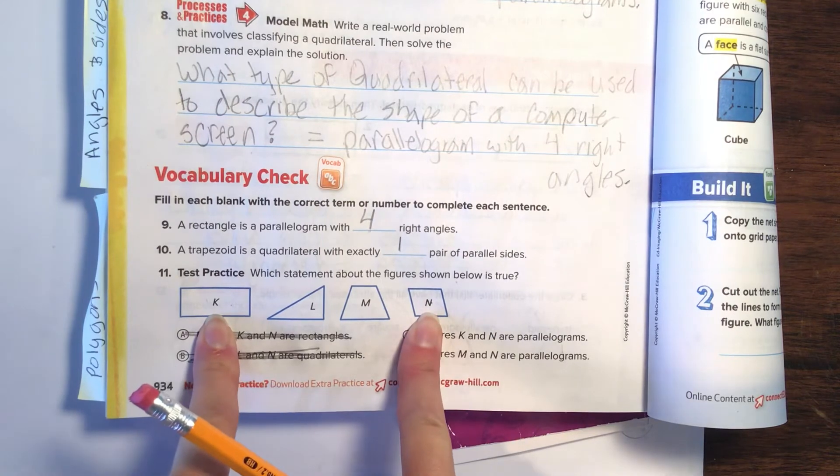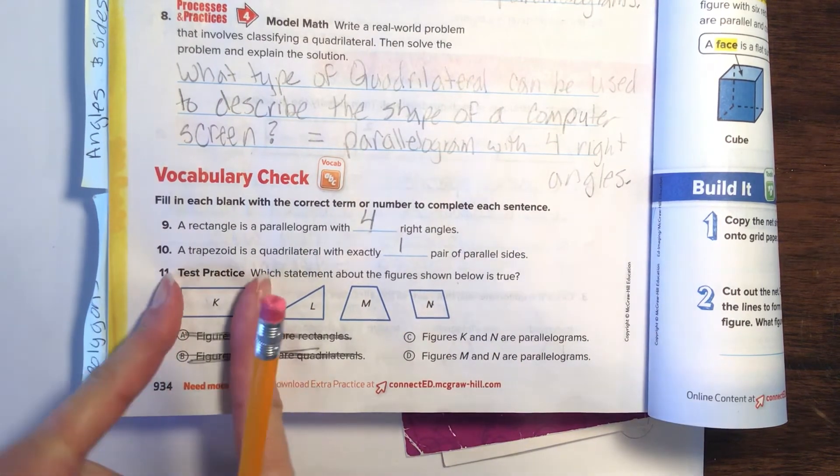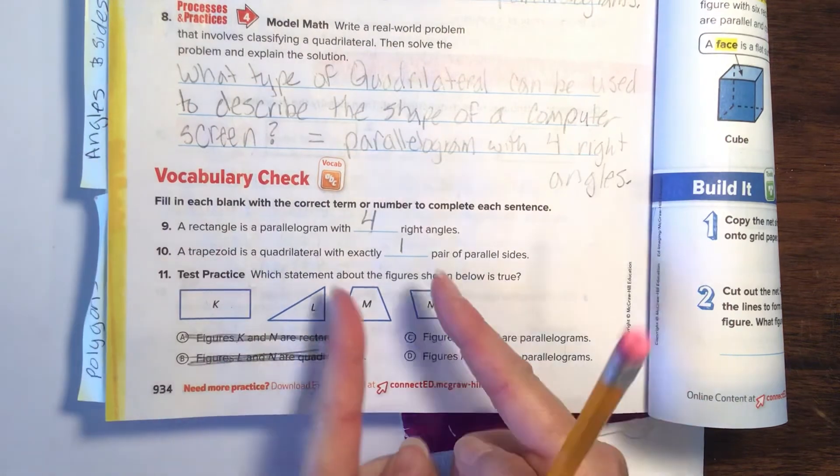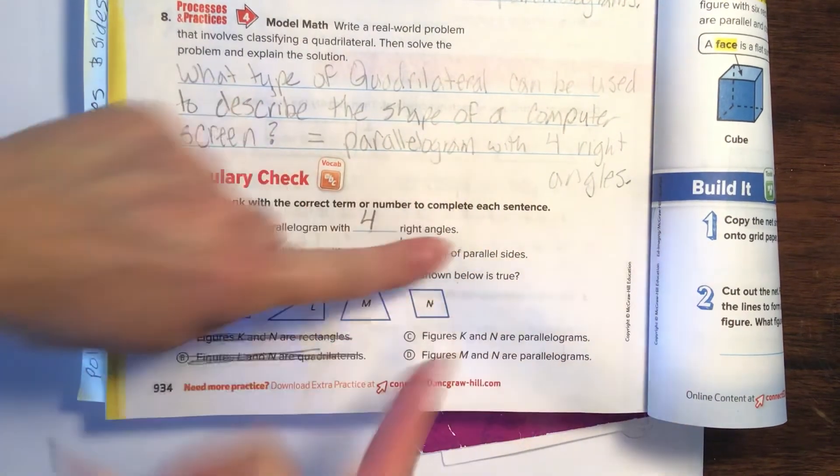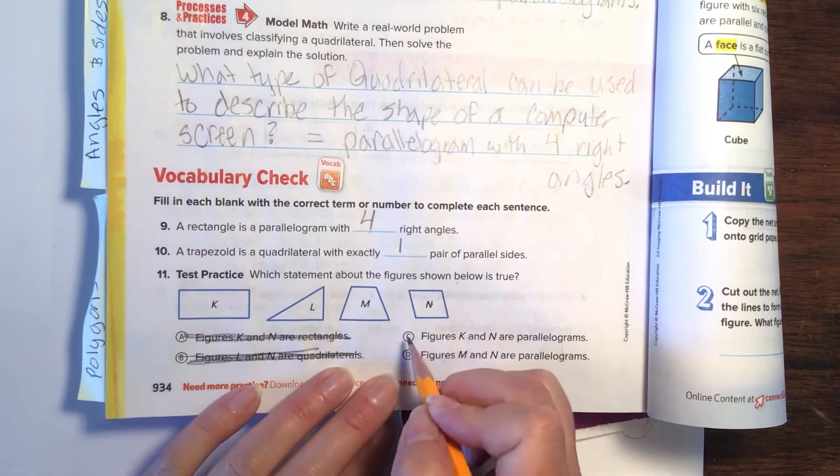Let's try this one. Figures K and N are parallelograms. To be a parallelogram, they have to have two pairs of parallel sides. One, two. One, two. Hey, that's correct. I would agree with that. That one is correct.